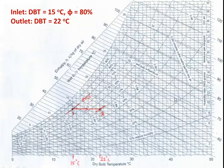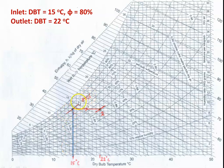This problem is solved using the psychrometric chart. The inlet condition is dry bulb temperature 15°C and relative humidity 80%. The outlet condition is dry bulb temperature 22°C. On the psychrometric chart, take the x-axis (dry bulb temperature). At 15°C, draw a vertical line to meet the 80% relative humidity curve — this is point 1. Then draw a horizontal line from point 1 to meet 22°C — that is the sensible heating process from inlet to outlet.